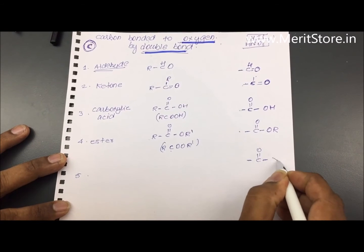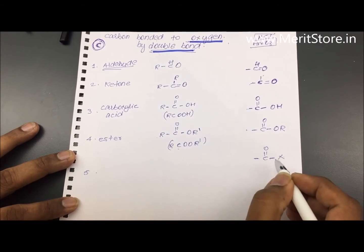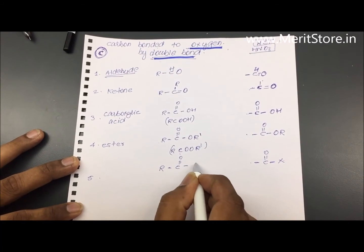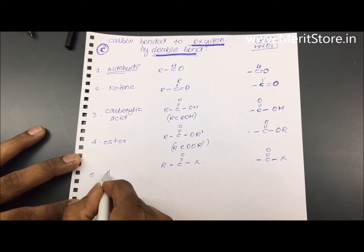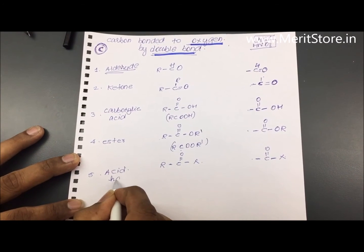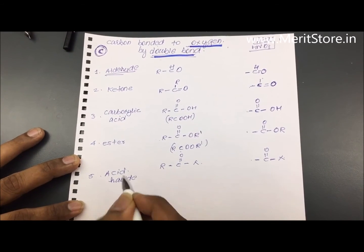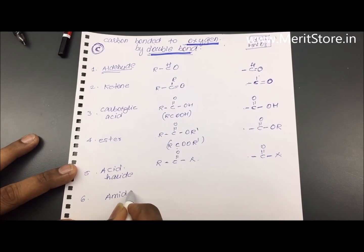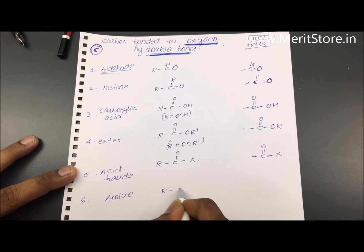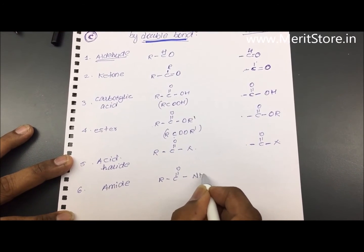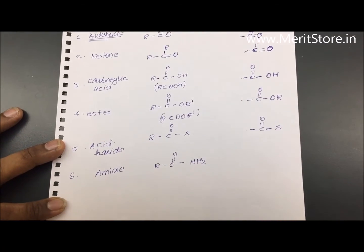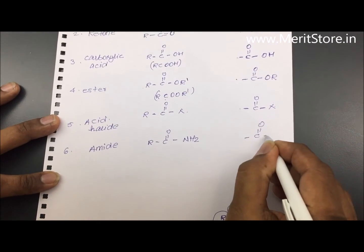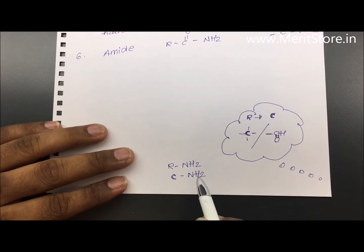The fifth is C=O connected to X — a halogen — written as R-CO-X. These are called acid halides. The sixth is the amide group — R-CO-NH2. The functional group, once you remove the R, is -CO-NH2.